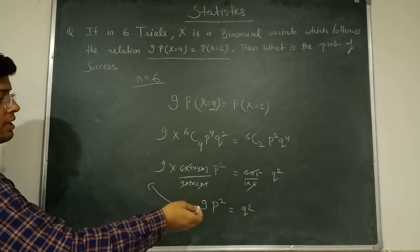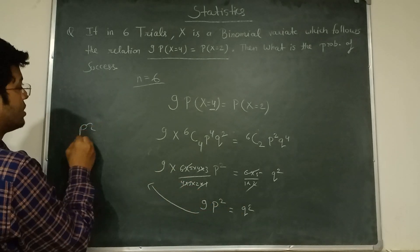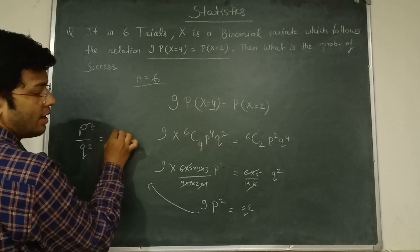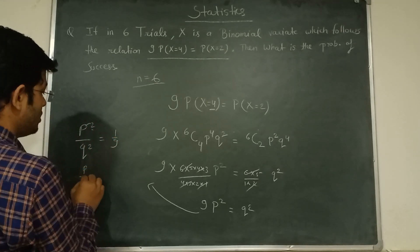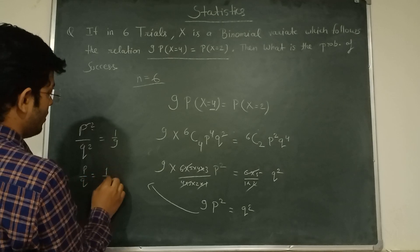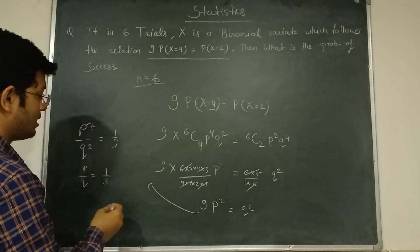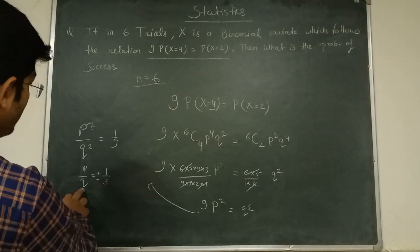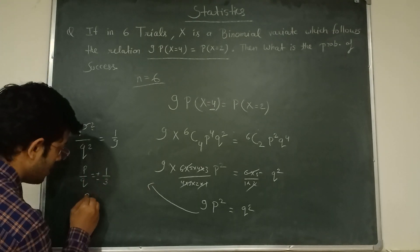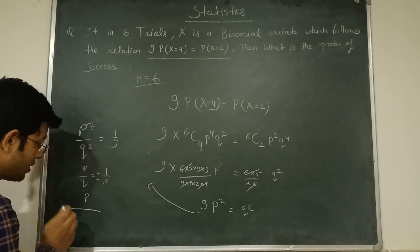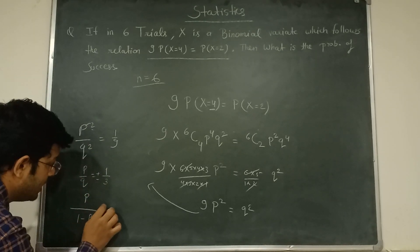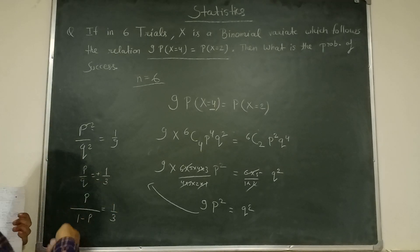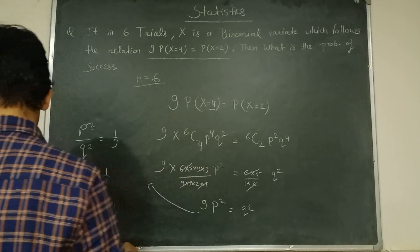So 9p² = q². Then p/q = ±1/3. We can take plus or minus. If we write q = 1-p, then after we solve this equation.